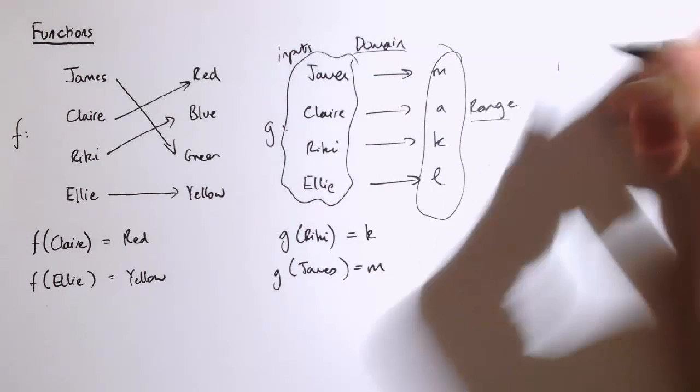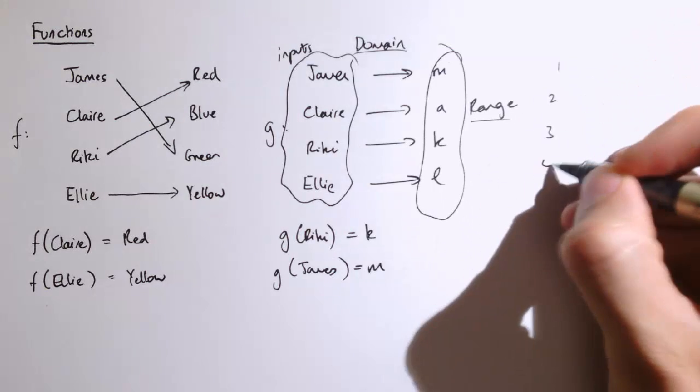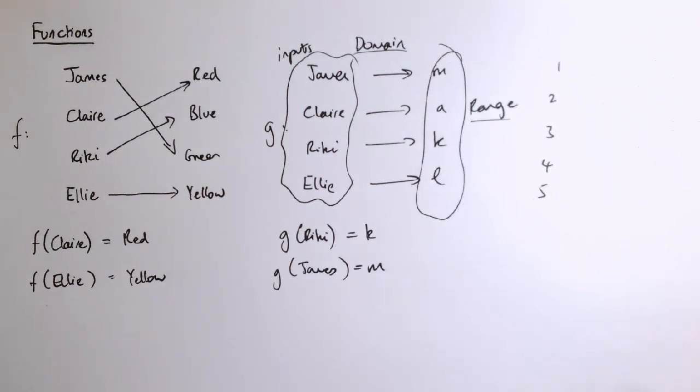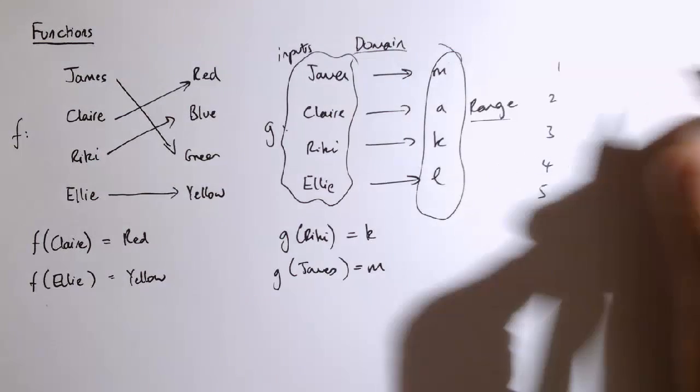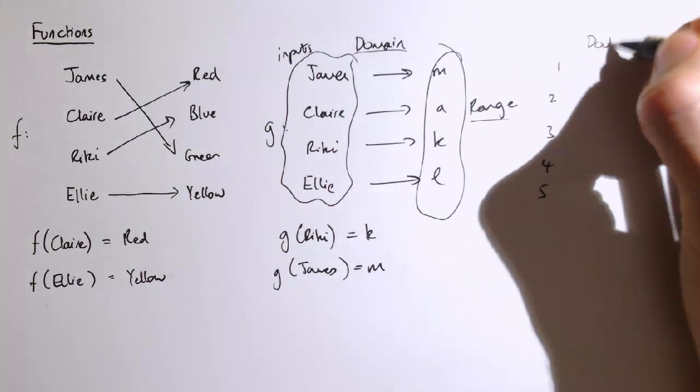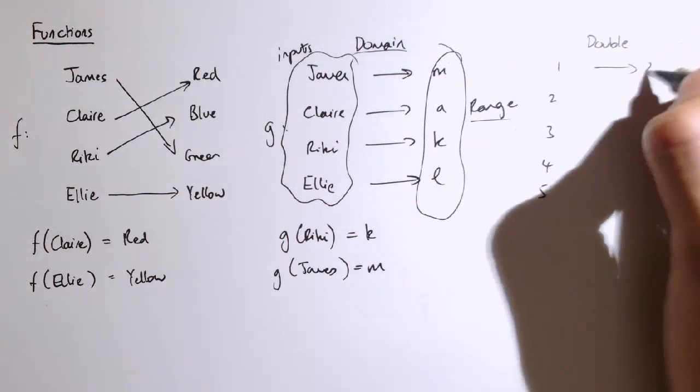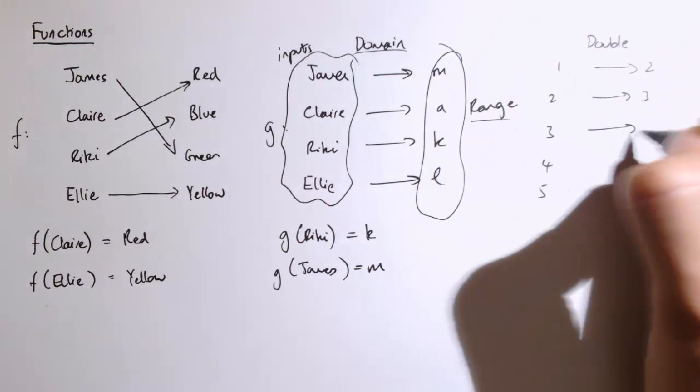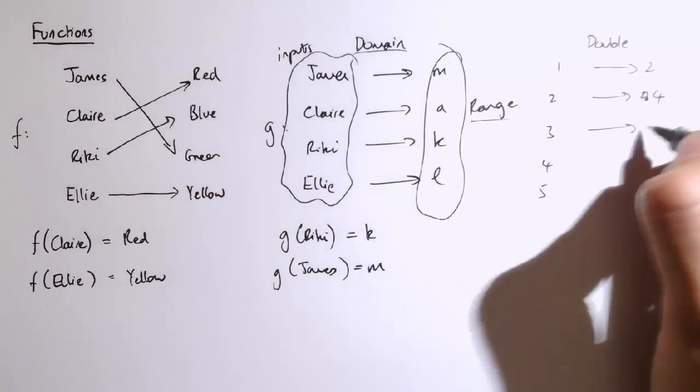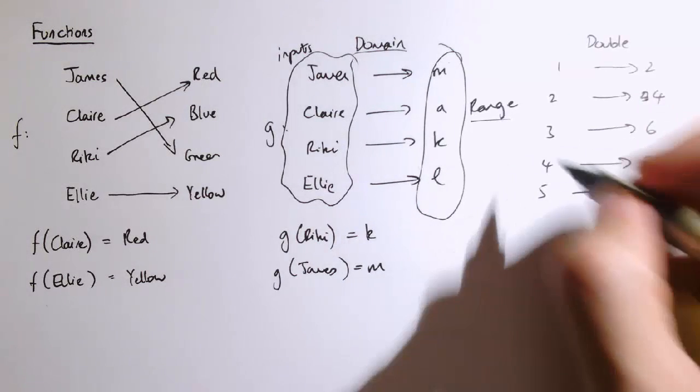So it might be that I could take the domain of a function to be the numbers 1, 2, 3, 4 and 5. And actually this function might be a doubling function. So 1 would be mapped to 2, 2 would be mapped to 4, 3 would be mapped to 6, 4 would be mapped to 8, 5 would be mapped to 10.